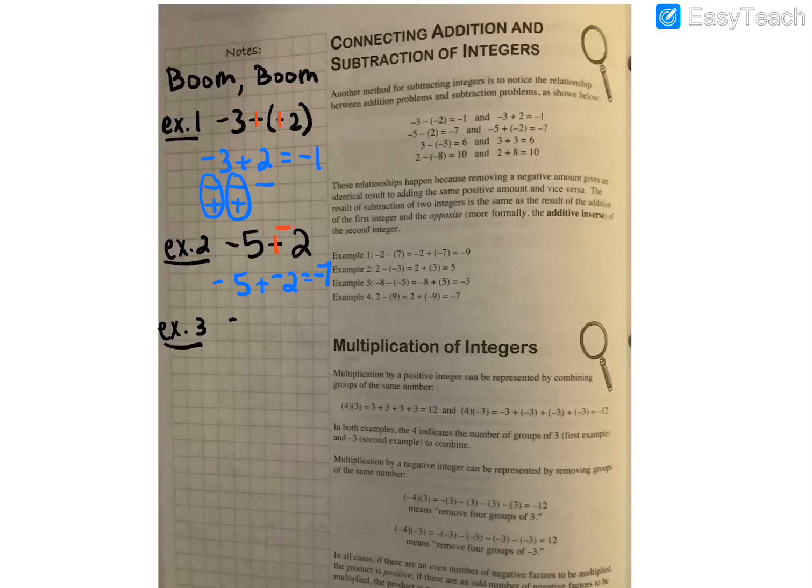Okay, third one is three minus a negative three. So same thing. I go boom, boom. Again, we don't change the sign of the first number. This one always stays the same. We change subtraction to addition and change the sign of the second number.